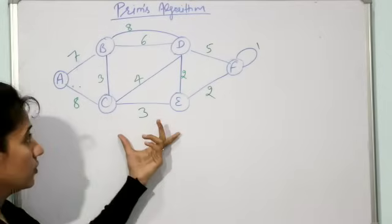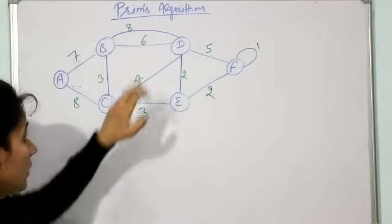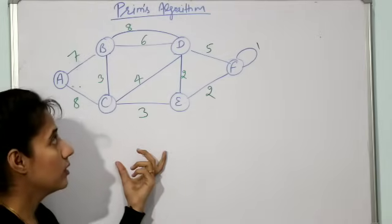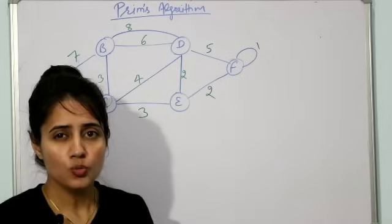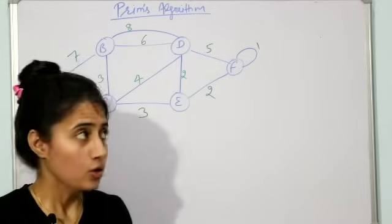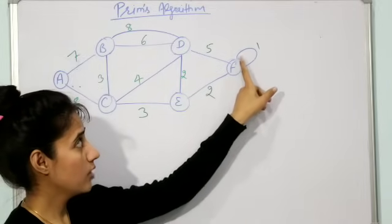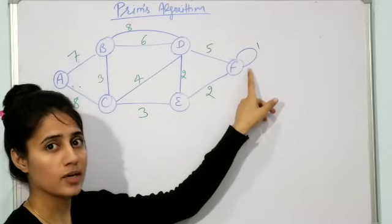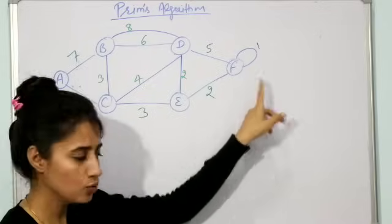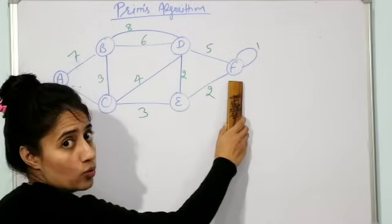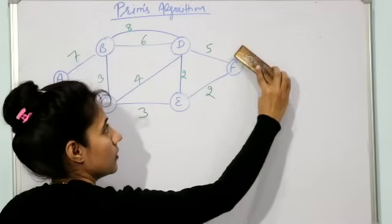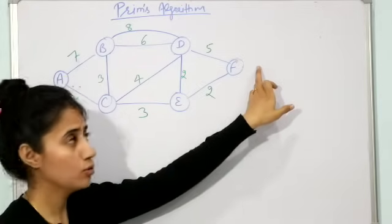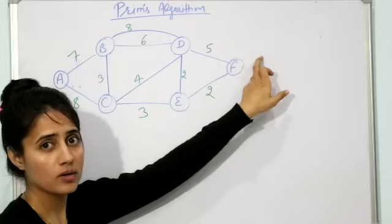Suppose this is our graph. We will now apply Prim's algorithm. The first step is to remove all the loops and parallel edges. A loop means an edge that starts from the same vertex and comes back to the same vertex. In this graph we have only one loop, so we remove this one.